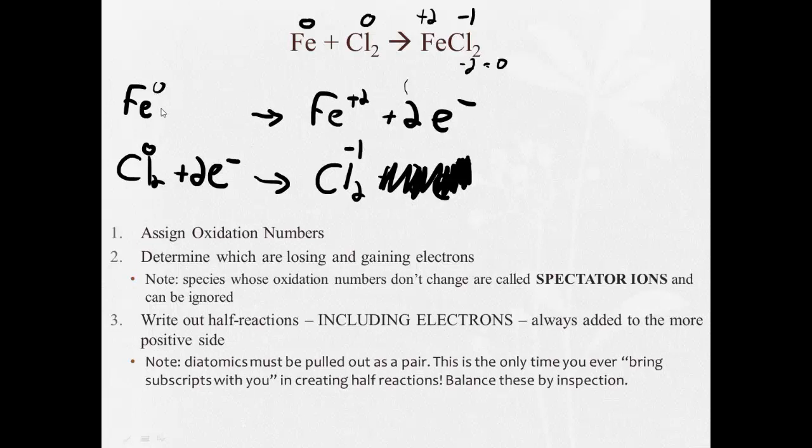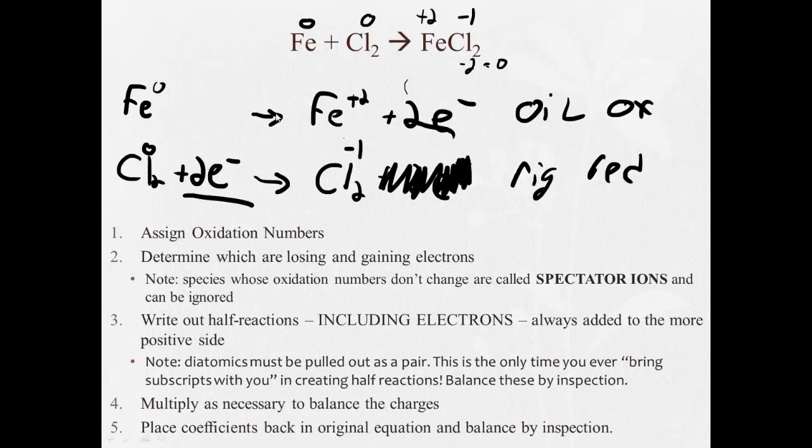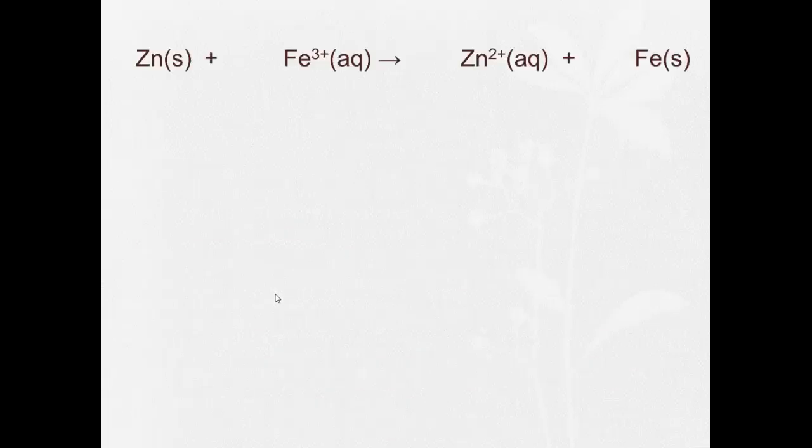Oxidation is losing. This is losing electrons. So this is the oxidation. Reduction is gaining. This is gaining electrons. Reduction is gaining. So this is my reduction here. Well these are already balanced. Two electrons, two electrons. So I don't need to do anything here. So I don't need to multiply. And my coefficients are all one. So this equation was already balanced. So all I really did here was identify that the iron giving up electrons is the oxidation half of the reaction, and the chlorine by gaining electrons is the reduction half of the reaction.